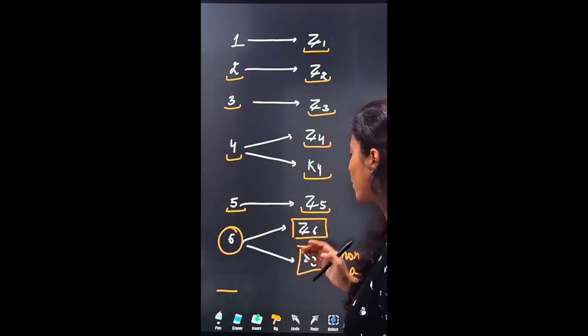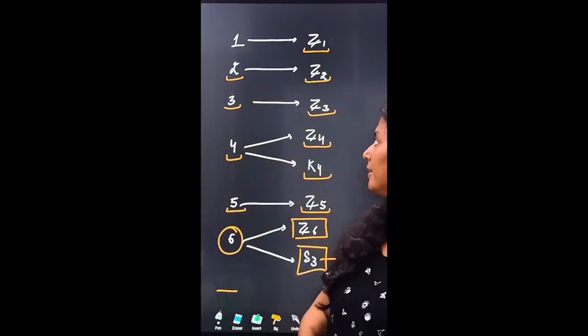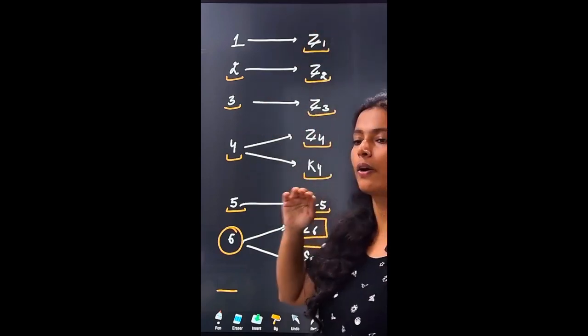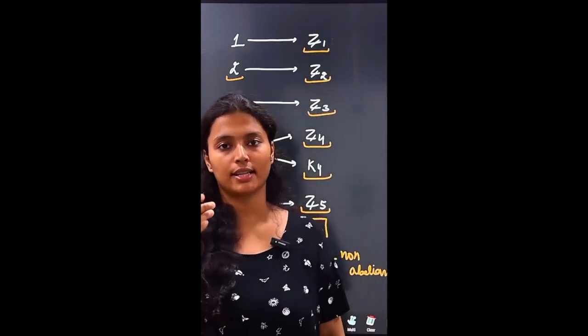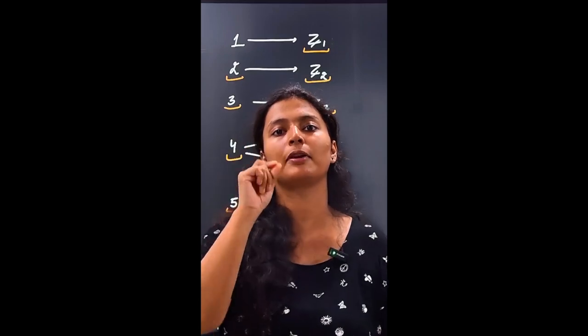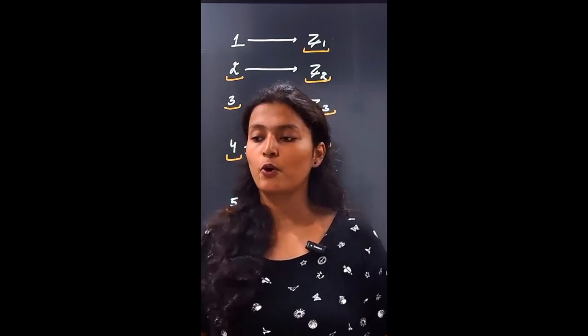The order six groups also include non-abelian groups. The S3 type of non-abelian group is possible. One of the order six groups is non-abelian. So the first and smallest non-abelian group will be in the order six.